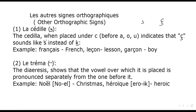Next is le tréma, the diaeresis — the double dot. It shows that the vowel over which it is placed is pronounced separately from the one before it. For example: Noël, where the e with the tréma is separated, which means Christmas. Another example is aéroïque, where the i is separated — aéro, then ïque.